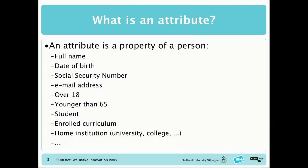Before we start, we need to define what an attribute is. Those of you familiar with identity federations will already know. An attribute is a property of a person — it can be something like your name, the fact that you're a student or staff member, that you are over 18, or something very identifying like your social security number.